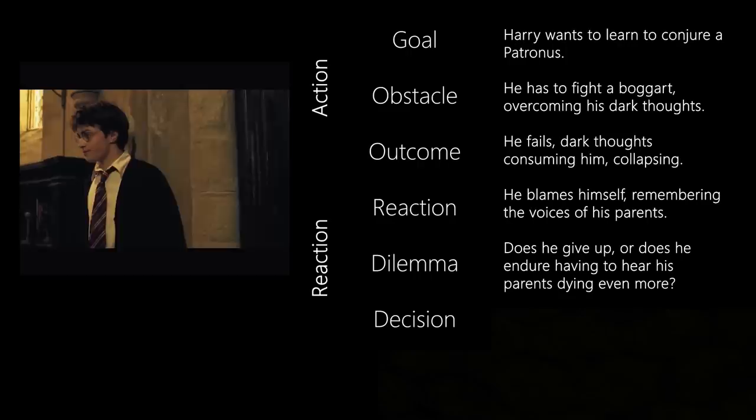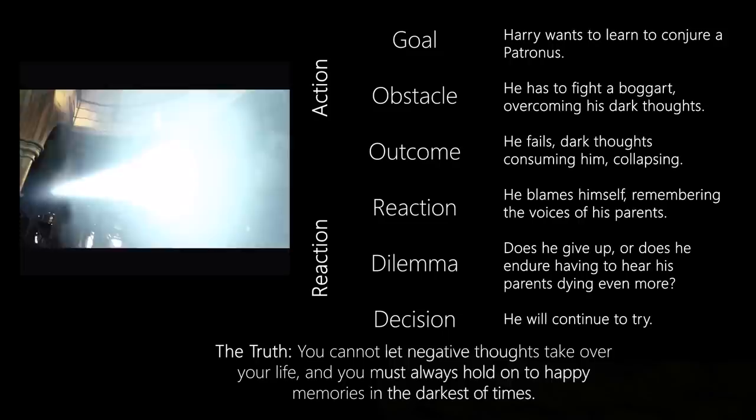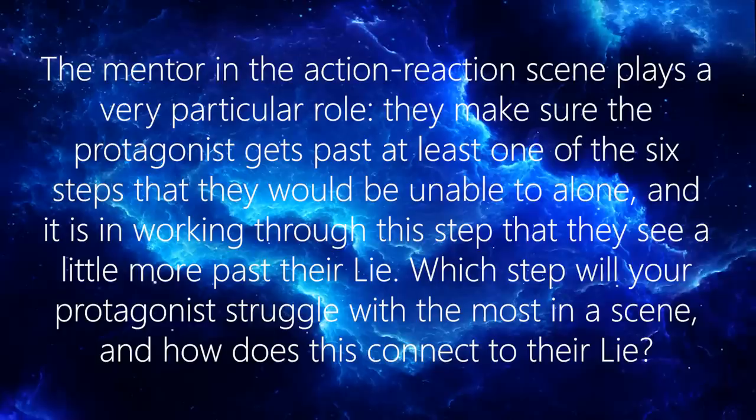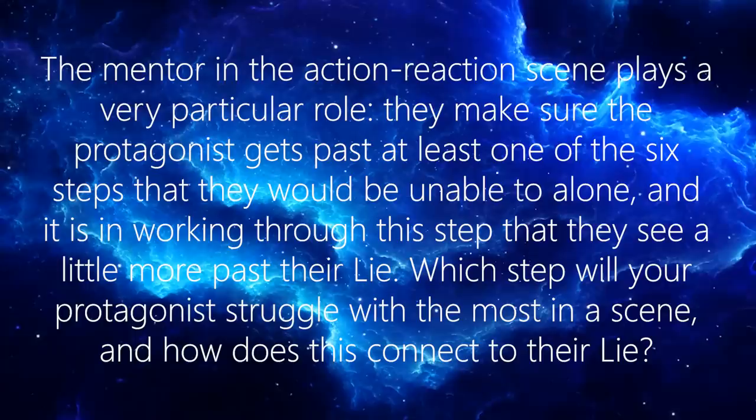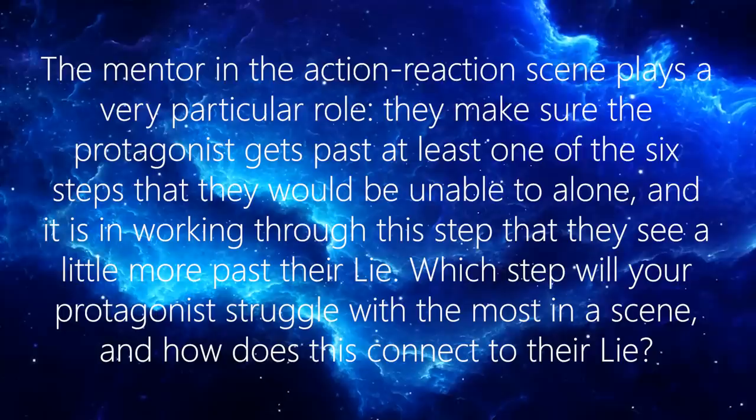This weaves into the truth that Lupin is trying to teach him — he can never forget his happiest memories in the darkest of times, because you have to use happy memories to conjure a Patronus. The mentor in the action-reaction scene plays a very particular role: they make sure that the protagonist gets past at least one of these six steps that they would be unable to alone. And it is in working through this step that they see a little bit more past their lie. Which step will your protagonist struggle with the most, and how does this connect to their lie?